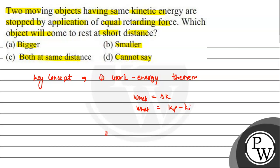And the second concept is the formula of work done: W equals F dot D, where F is force and D is displacement.